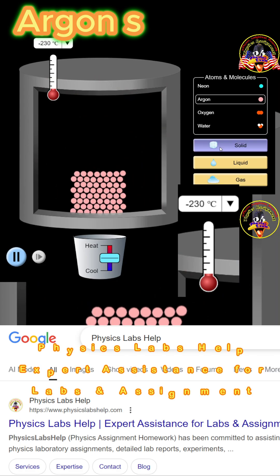Argon solidifies at minus 230 degrees Celsius, melts into liquid at minus 187 degrees Celsius, and becomes gaseous at minus 84 degrees Celsius.